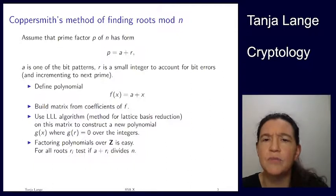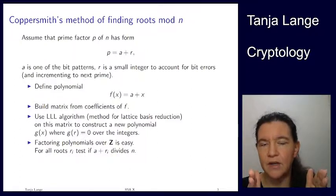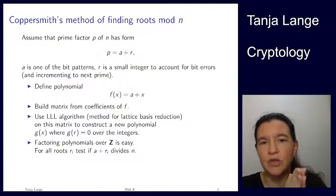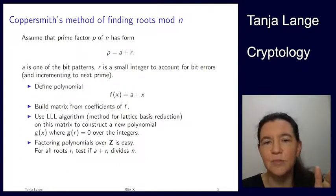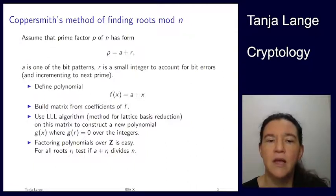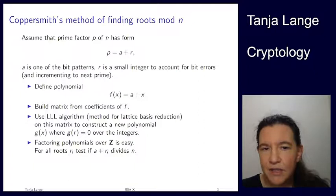The last part for Coppersmith's method is actually not so small. I'm going to show you an example in a moment where it's a third of the length of p, roughly p to the one third is the size of r. This would capture all r's which are up to one third, and a is a bit pattern for the top part.